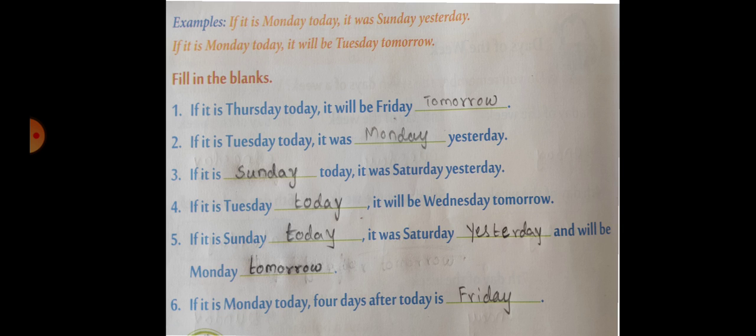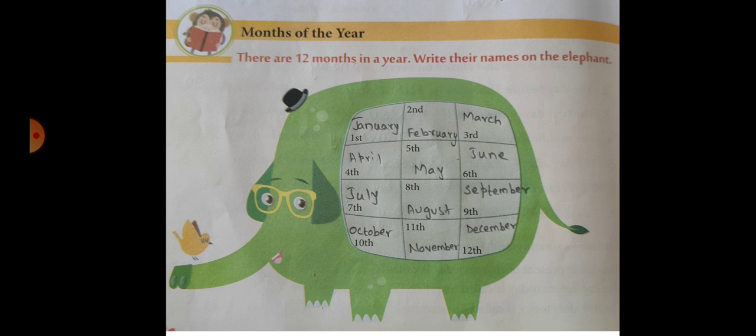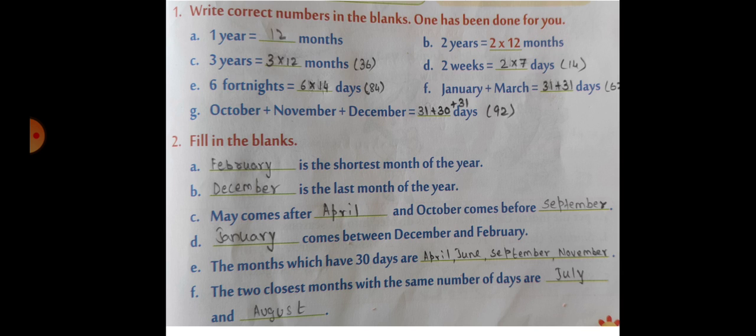Now see the elephant is filled with 12 months in a year. Write correct numbers in the blanks. One has been done for you. See here in the blank I have written and also the total of the days or months.